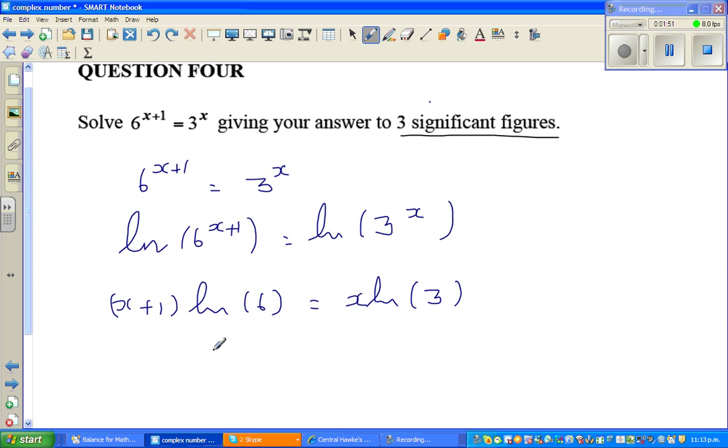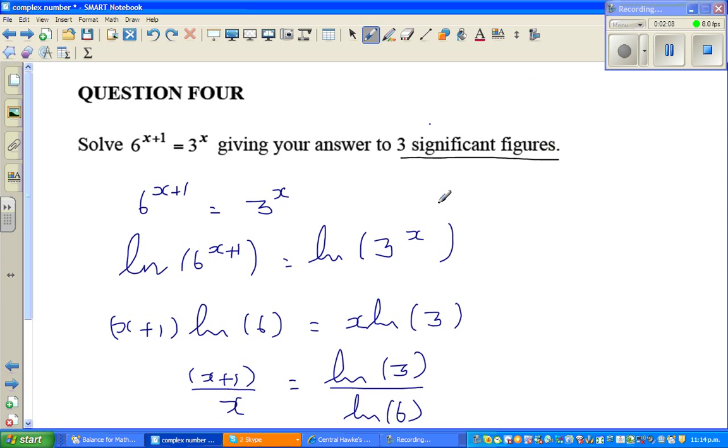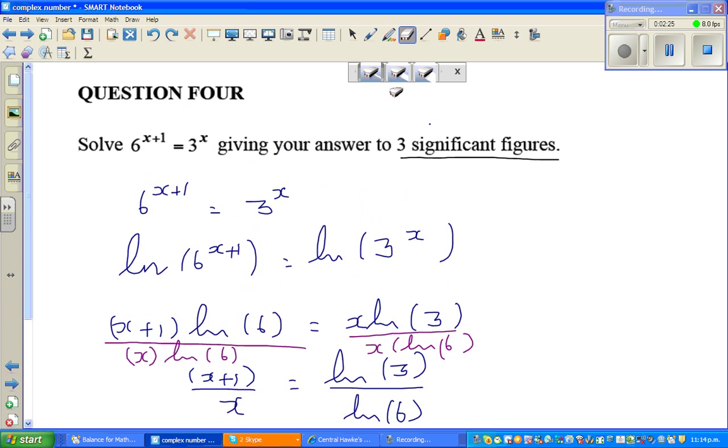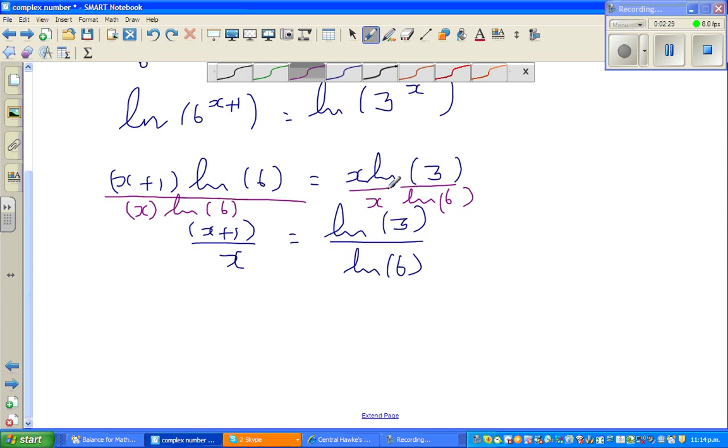Now I'm going to bring this x down by dividing both sides by x. It will be x plus 1 over x is equal to natural log of 3 divided by natural log of 6. I've divided both sides by x times natural log of 6.